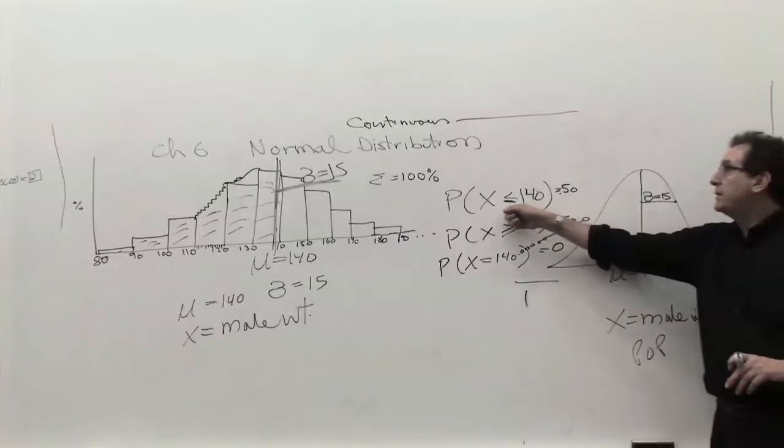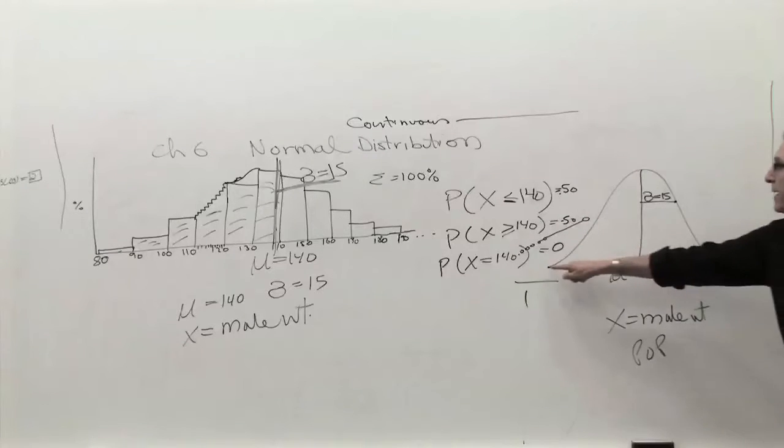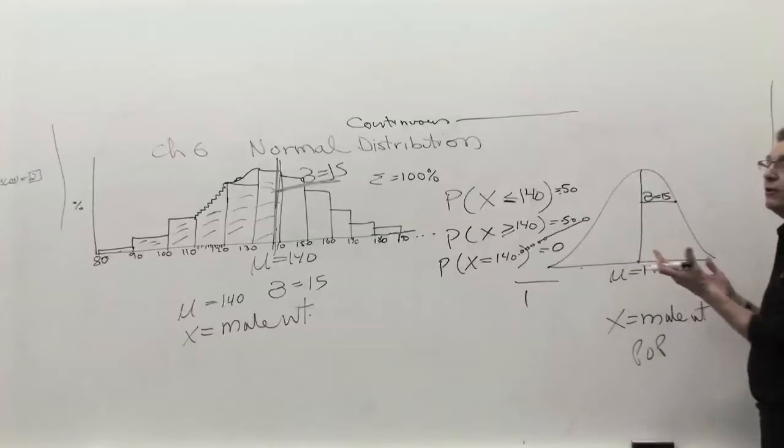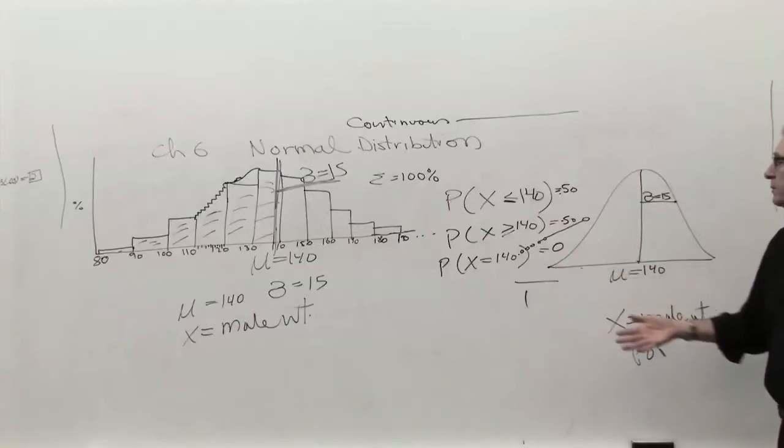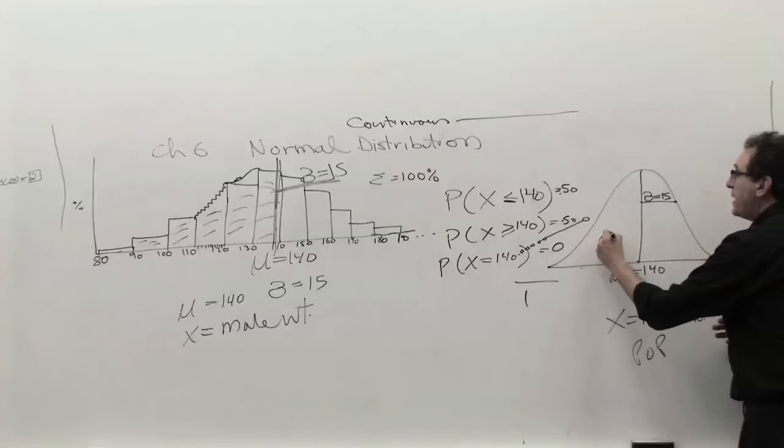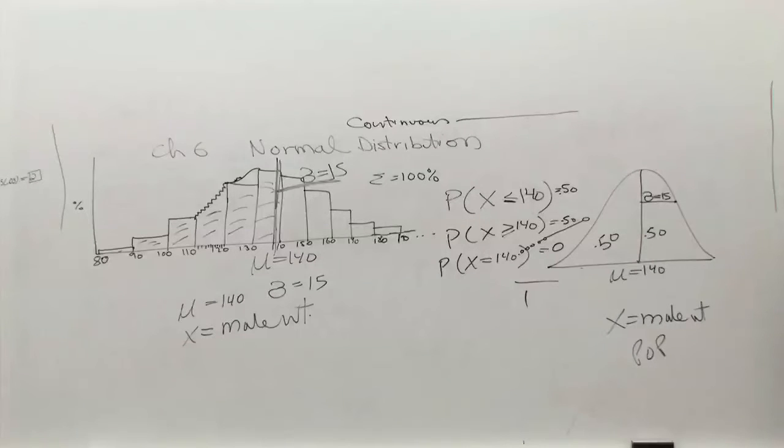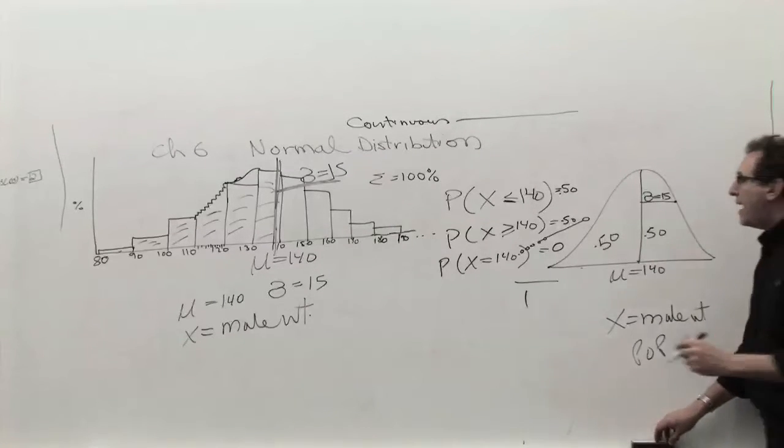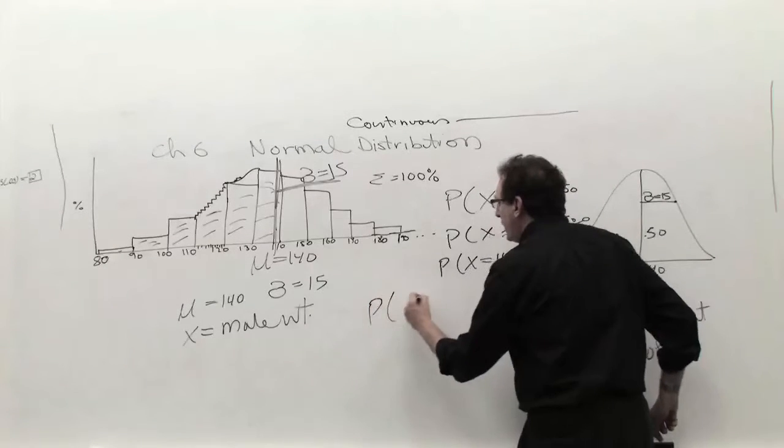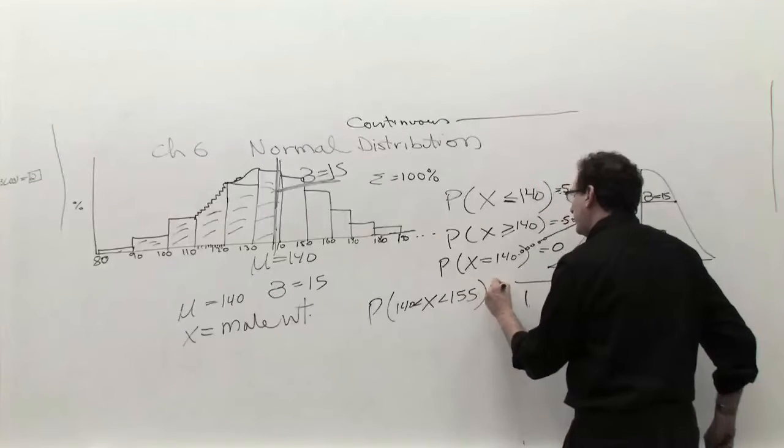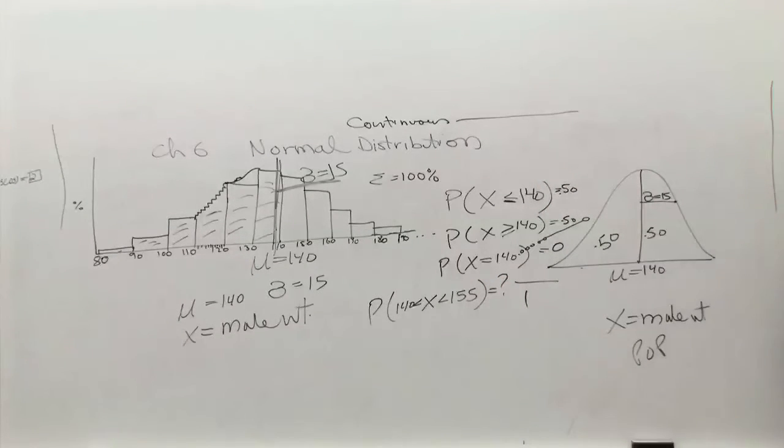So now let's answer the question, how many people weigh less than 140? Well, if from here to here is a hundred percent of the area and the two sides are symmetric and the number of people below 140 corresponds to the area, we'll make all those assumptions which are facts, then half the area is below 140 and half the area is above 140. Let's take it now one step further. How many people weigh between 140 and 155?